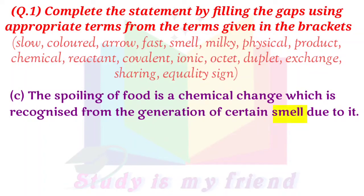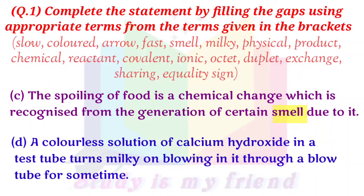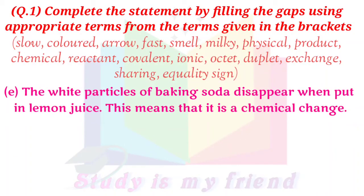C. The spoiling of food is a chemical change which is recognized from the generation of a certain smell. D. A colorless solution of calcium hydroxide in a test tube turns milky on blowing into it through a blow tube for some time. E. The white particles of baking soda disappear when put in lemon juice. This means that it is a chemical change.